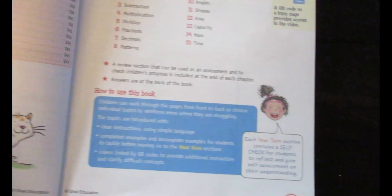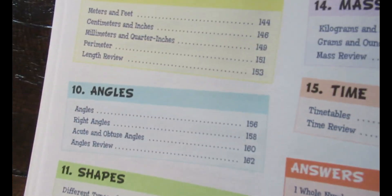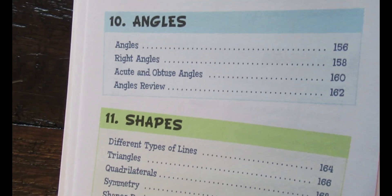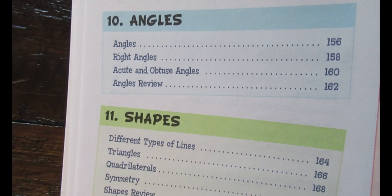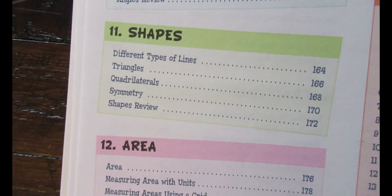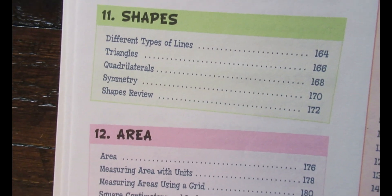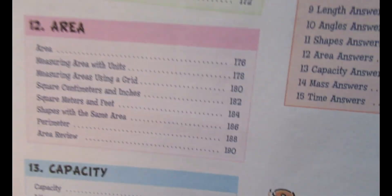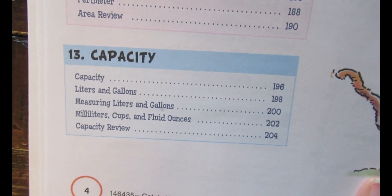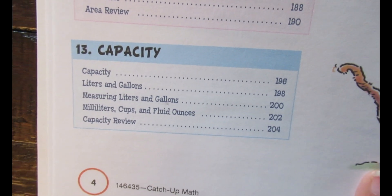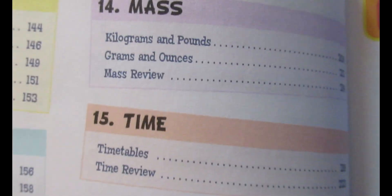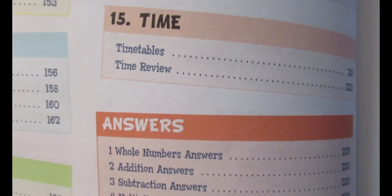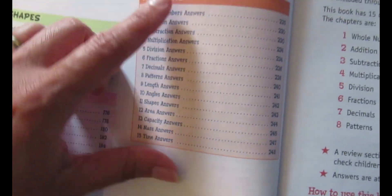There's length—meters and feet—ending in perimeter, angles ending in acute and obtuse angles, shapes, different types of lines ending in symmetry, area ending in perimeter, capacity ending in milliliters, cups, and fluid ounces.